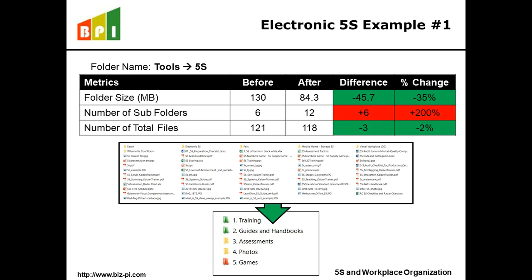Here's an example I did on my own drive. I picked a folder that had been building up over the years — six folders, 130 megabytes, 121 files. After going through this exercise, I dropped to 84 megabytes, added more subfolders, and kept about the same number of files without deleting that many. Space went down 35%, and with more subfolders, it's easier for me to find things. In another example, I cut down the total number of files quite a bit as well.